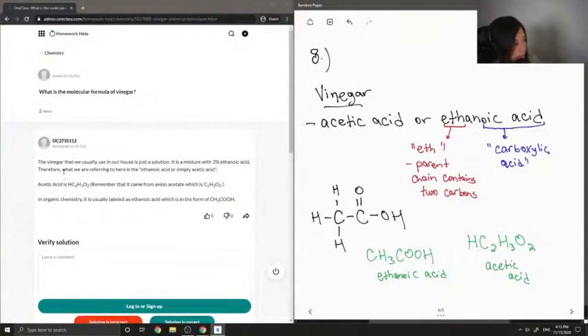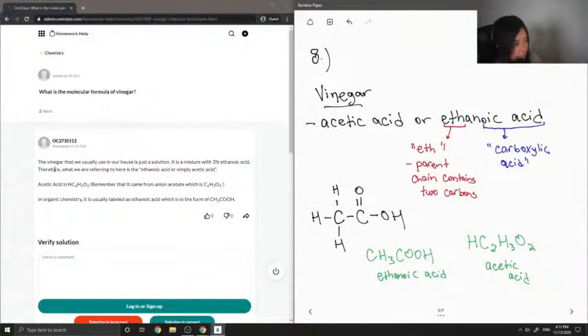So let's see what our junior tutor said. The vinegar that we usually use in our house is just a solution. In organic chemistry, it is a mixture of 3% ethanoic acid. Therefore, what we are referring to here is the ethanoic acid, or simply acetic acid.